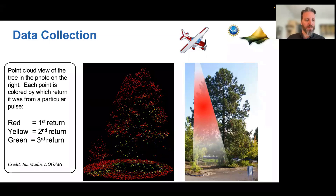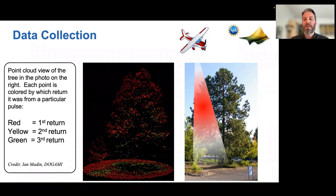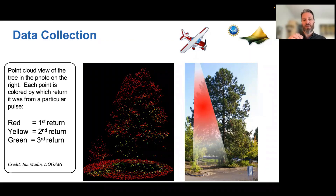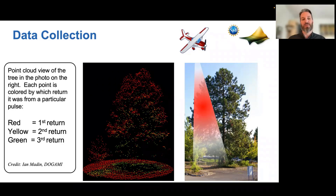Here's a cool figure from Ian Madden at DOGAMI — the Department of Geology and Mineral Industries at Oregon. This shows a tree outside his office that was LIDAR scanned. The plot on the left shows LIDAR colored by return number: red points are first returns, yellow are second returns, and green is third. There are fewer green returns, and you can see a shattering effect in cases where LIDAR didn't reach the ground because there were too many returns from the tree.